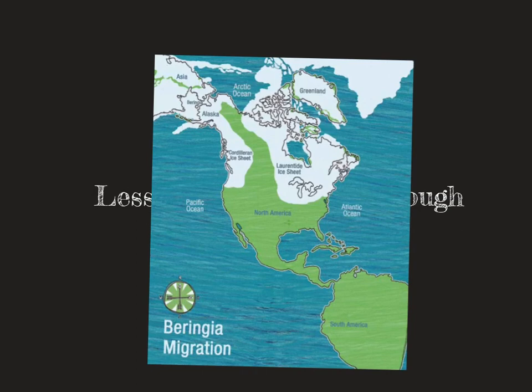The first question we ask ourselves is: how did they get here? People think that they came from Asia, and they actually think that they were able to walk here from Asia. Now, if you tried to walk here from Asia today, you wouldn't be able to, because there is just ocean between Asia and North America — there's no land.